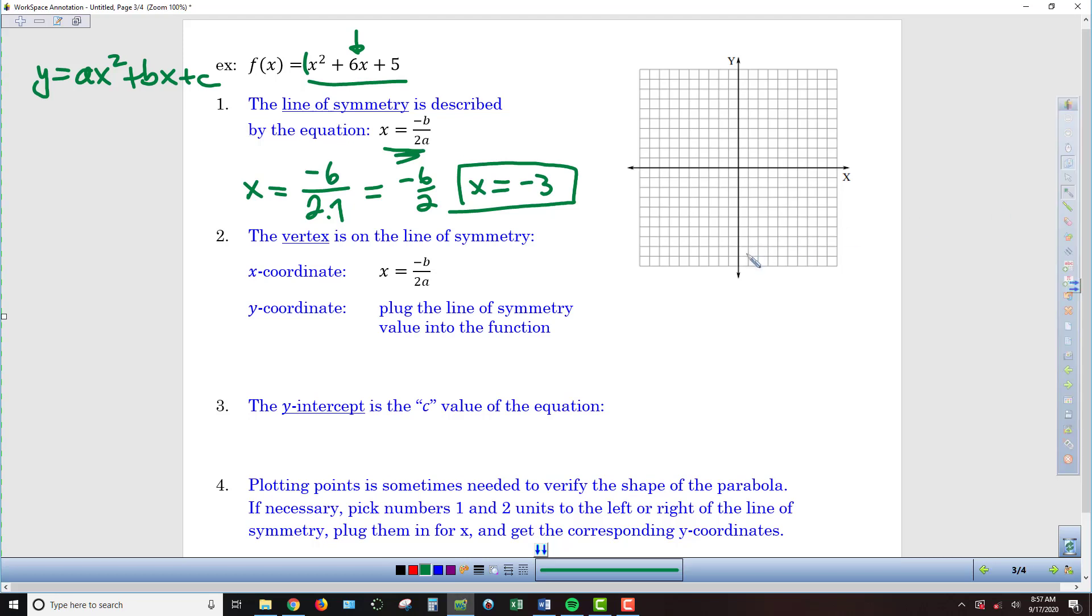On my graph, that means I'm going to put a vertical line at x = -3. That's going to be the line that's going to cut my parabola into two equal parts. It's also the line on which my vertex is going to be located.